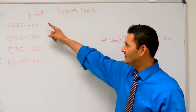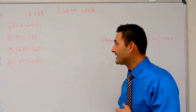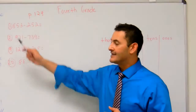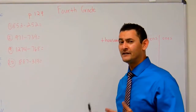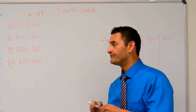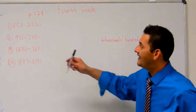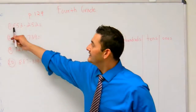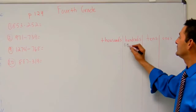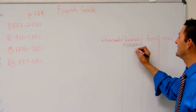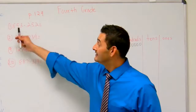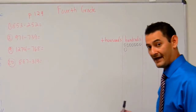Let's go ahead and do these sample problems. Let's start with number one. Number one reads 853 minus 252. So how many do I have in the hundreds place? I've got eight. How many do I have in the tens place? I've got five.